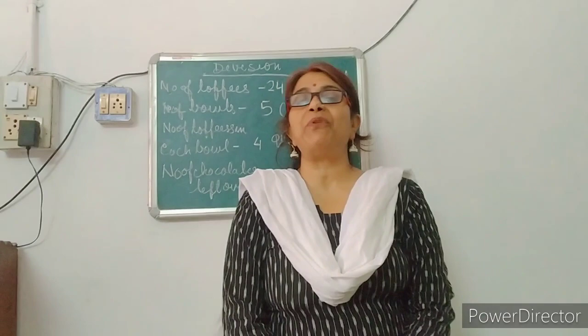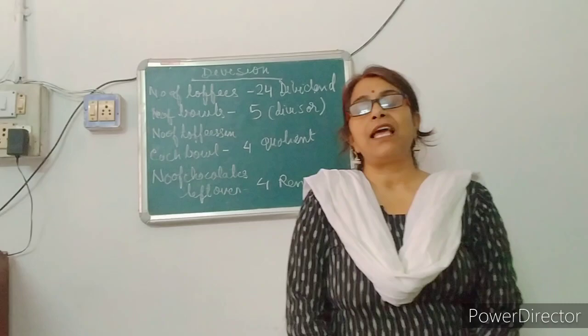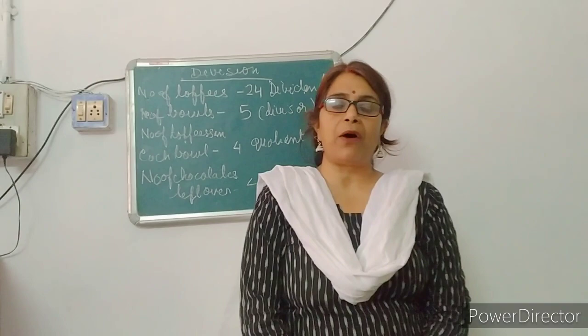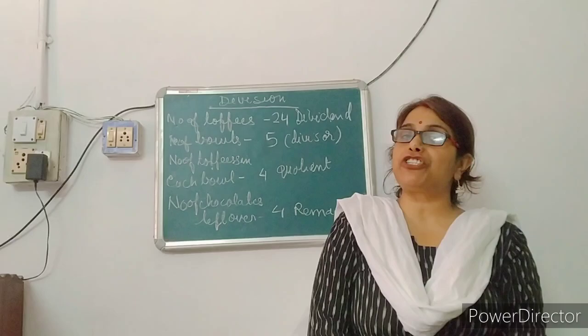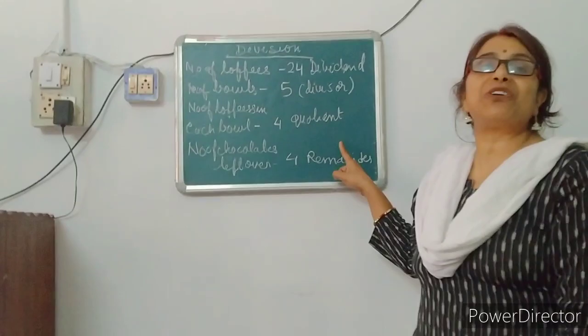Division is the equal distribution of the object. Here, we are distributing 24 toffees in 5 bowls, keeping the chocolates in equal amount. After putting the chocolates in the bowls, we found that 4 chocolates are left over on the plate — that left over chocolate is called remainder. The number of bowls is called divisor, and the number of toffees in each bowl, 4, is called quotient.